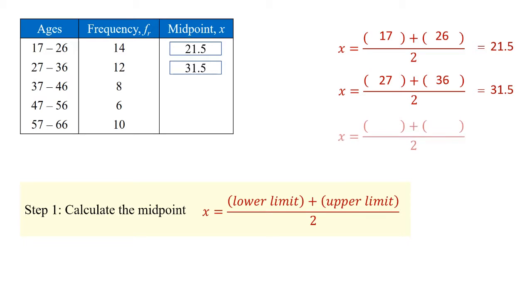For the next cell, 37 to 46, we add those two together, divide by 2, and the cell midpoint value is 41.5.